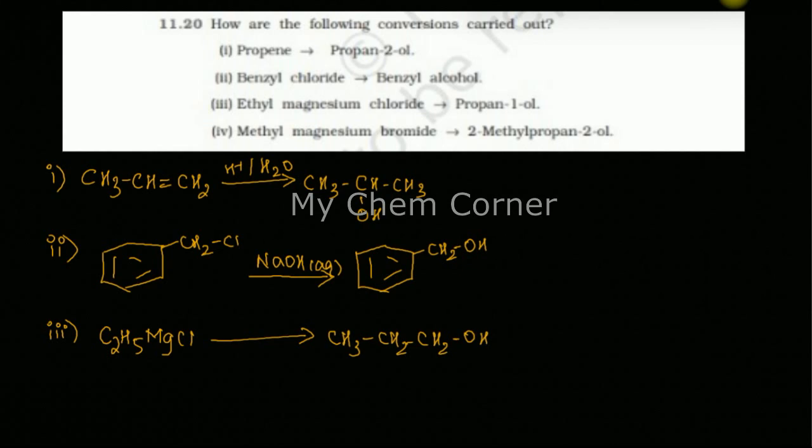That will come when you do Grignard's reagent with a formaldehyde, because here you are forming a primary alcohol. When we learn about Grignard's reagent in this chapter, we always learn that when you take a formaldehyde with the Grignard's reagent you will get a primary alcohol. If you take an aldehyde with Grignard's reagent you will get a secondary alcohol, and if you take a ketone with Grignard's reagent you will get a tertiary alcohol.